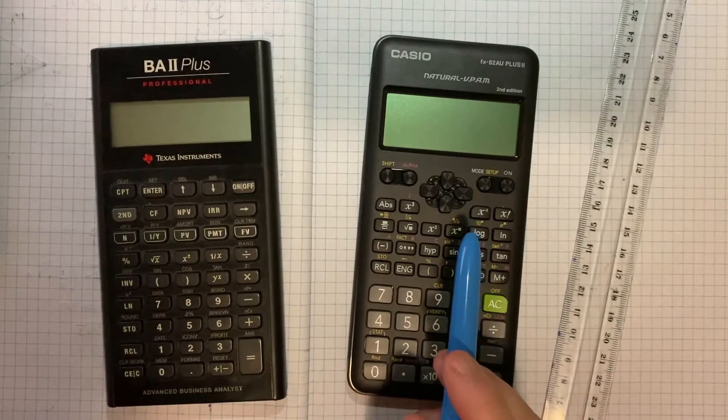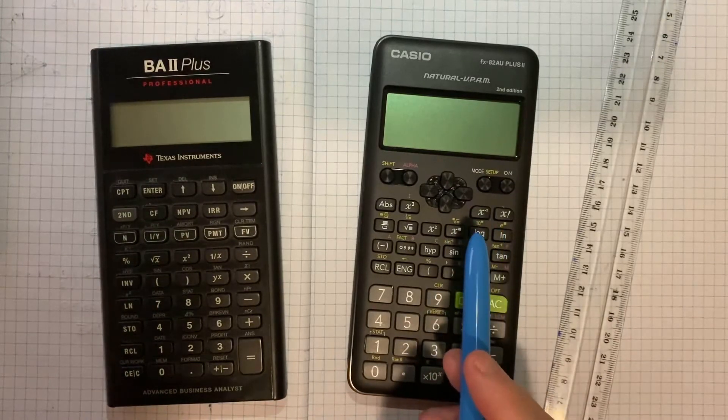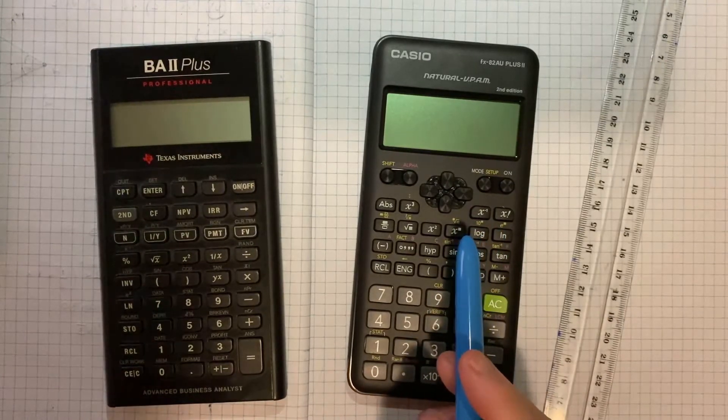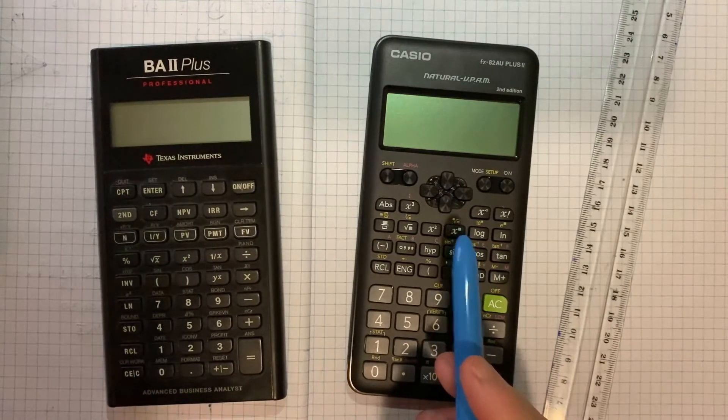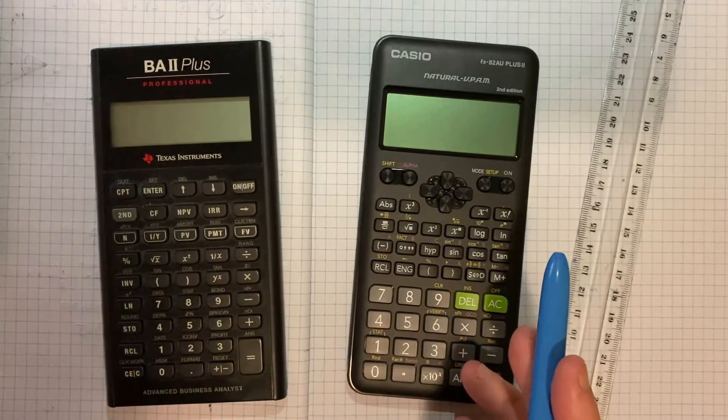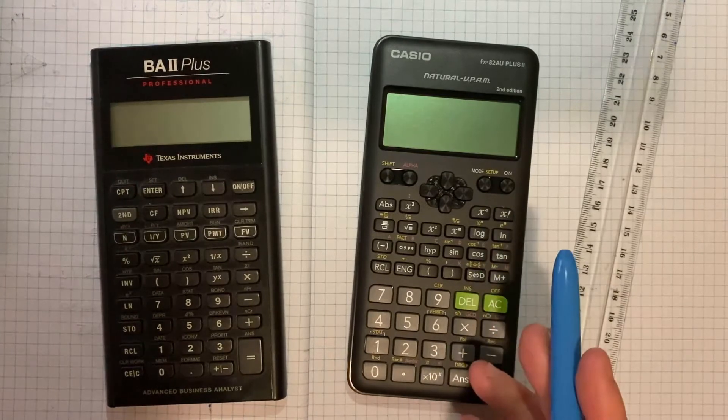I chose this one because it is approved by NESA, which is the Statutory Authority for Education in NSW. And it seemed cheap at just $30. But now I'm wondering, did I make the right choice?